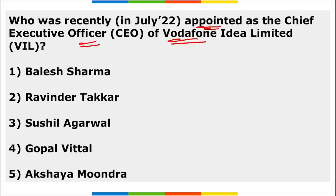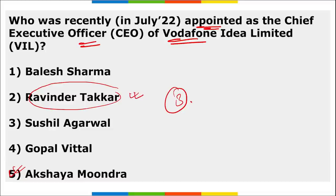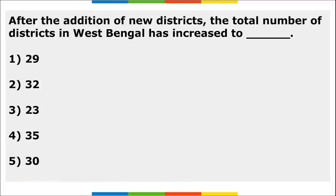Who was recently appointed as the Chief Executive Officer of Vodafone India Limited? Akshay Mundra has been appointed as the new CEO of Vodafone India Limited. He will be replacing Ravinder Takkar, who was appointed in 2019 for three years. Akshay Mundra has been appointed for another three-year term.